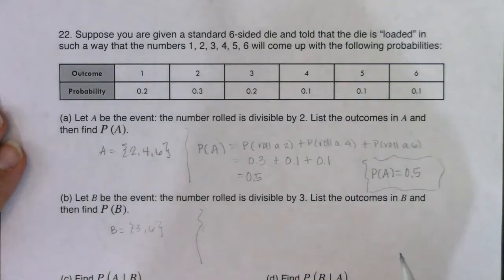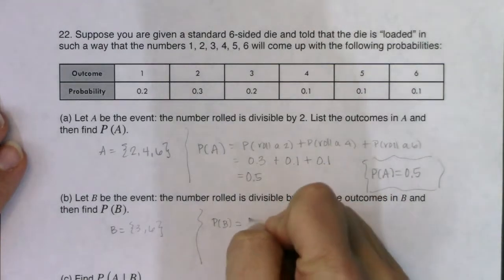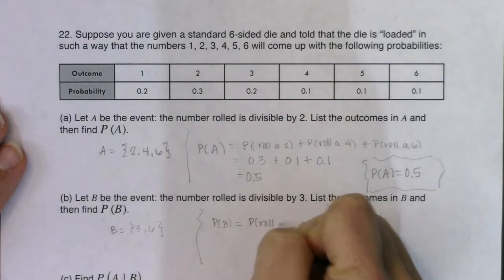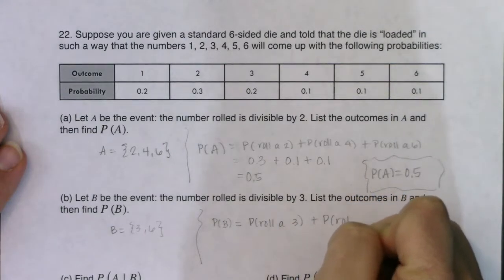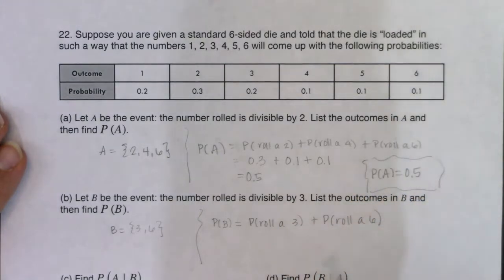Okay. And in terms of the probability of B, well, that will happen if I roll a 3 or I roll a 6. So let's see what those probabilities are. I will add those disjoint events together. All right,